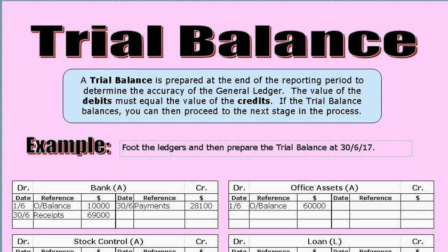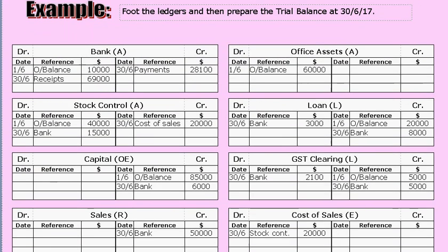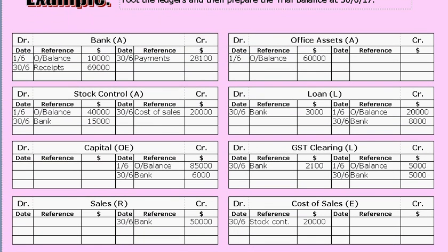The first part of preparing a trial balance is to go to the general ledger — that's where all the ledger accounts are kept. You have to determine a footed balance of each ledger account, that is, the balance or value of every ledger account. Let's look at the bank account as an example.